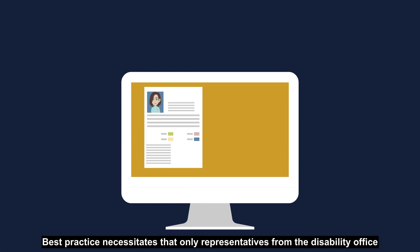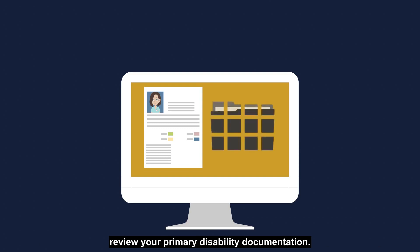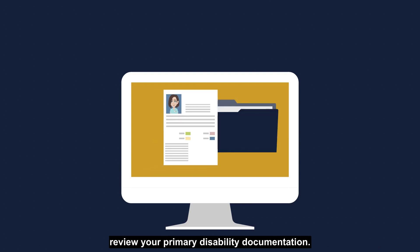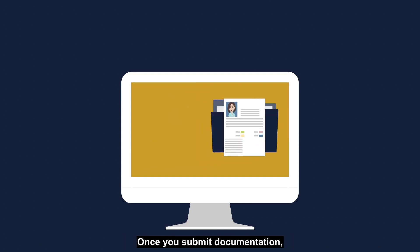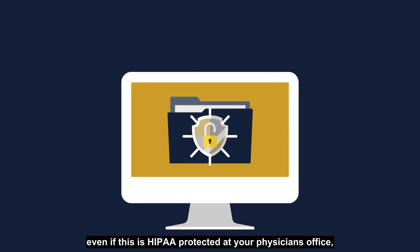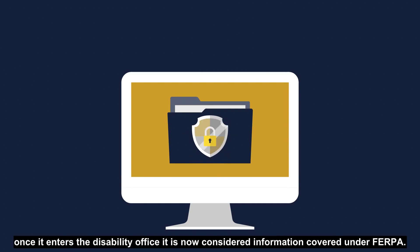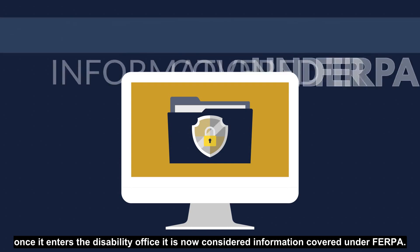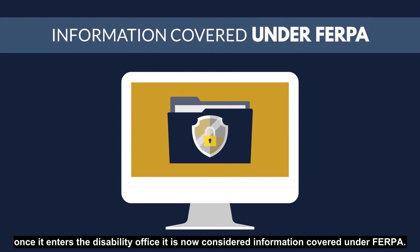Best practice necessitates that only representatives from the Disability Office review your primary disability documentation. Once you submit documentation, even if it is HIPAA protected at your physician's office, once it enters the Disability Office, it is now considered information covered under FERPA.